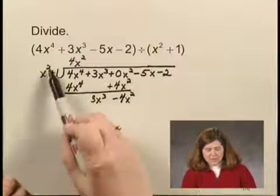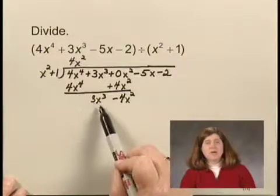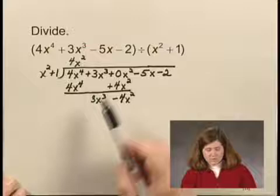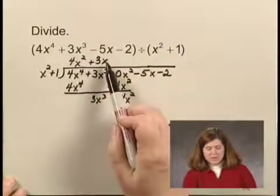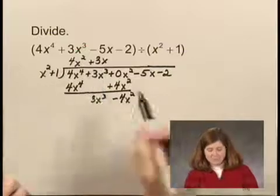Now I think x^2 times what is 3x^3. Well, that's going to be 3x. So I multiply 3x times x^2 + 1, which is 3x^3 + 3x.